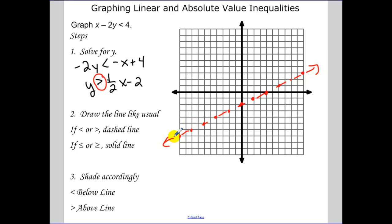Now that I have this dashed line, I need to figure out where I'm going to shade. This symbol, as long as the y is on the left, is greater than. So that means I'm going to be shading above the line. Now what you can do is test a point, and if that point makes a true inequality statement, you've shaded the correct region.